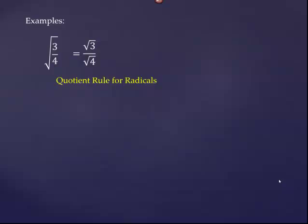Our next step is to simplify any of these that we can. Three is not a perfect square, so the numerator is in simplest form. The denominator — we do know that the square root of four is two, so we can simply rewrite this as the square root of three over two. And we're done because this expression meets all four of the criteria we talked about. So sometimes it's that easy.